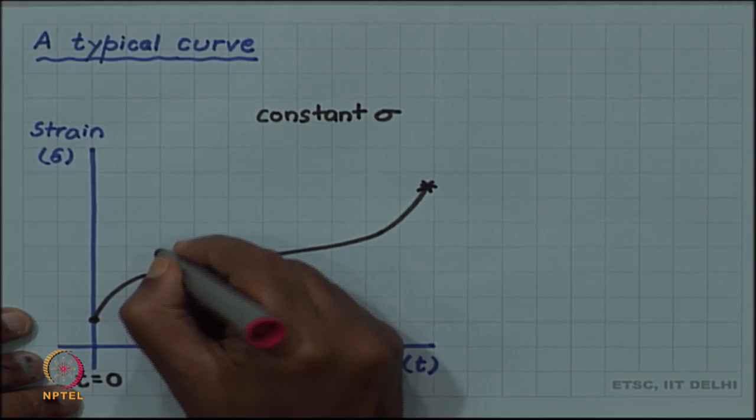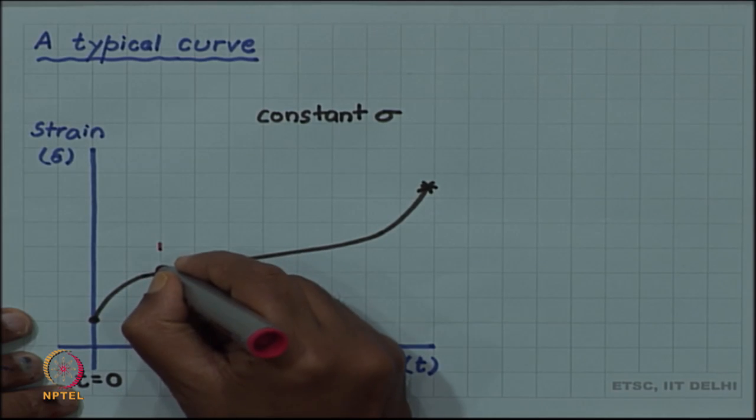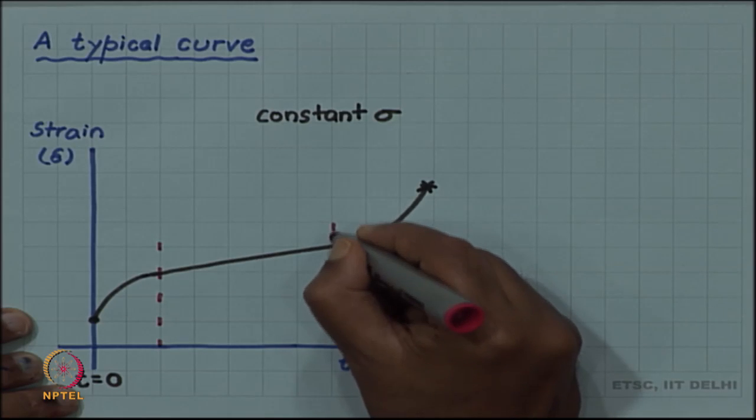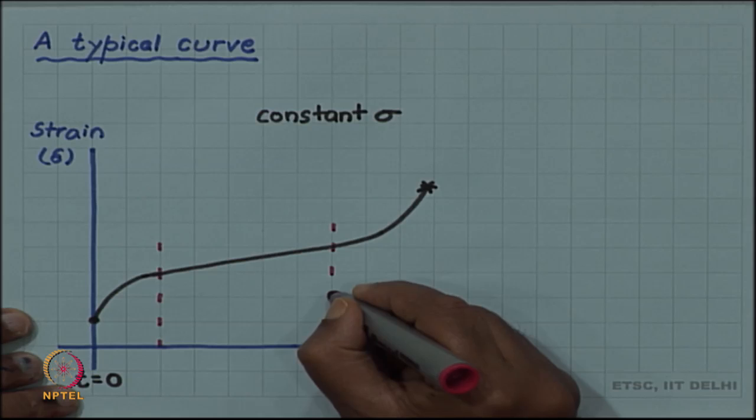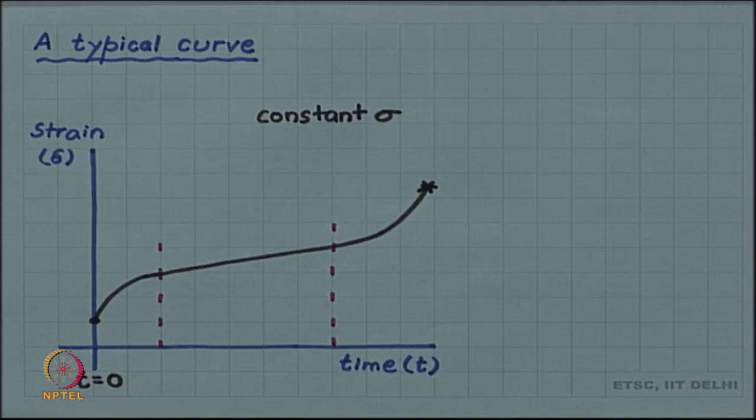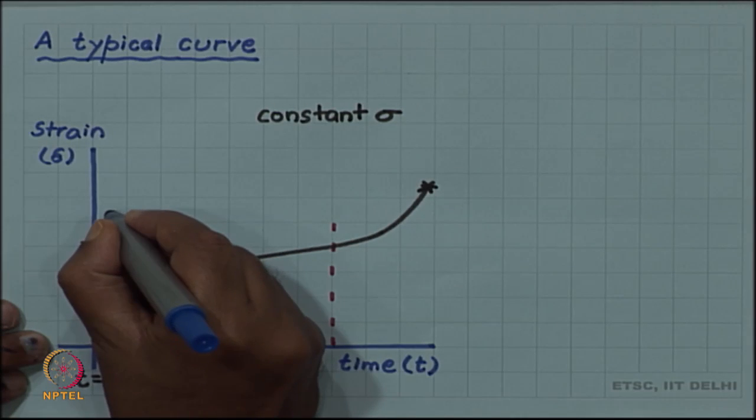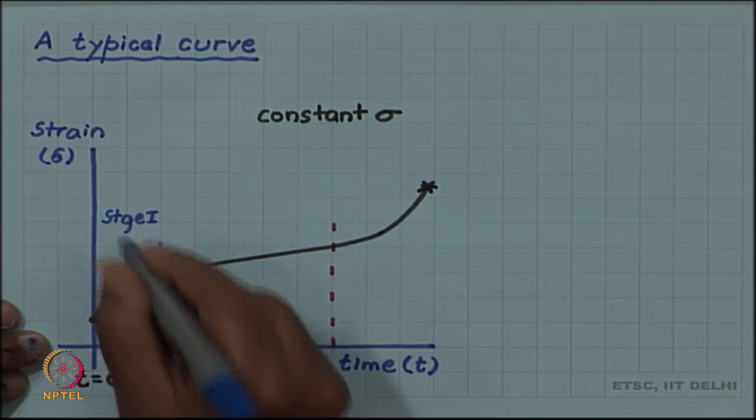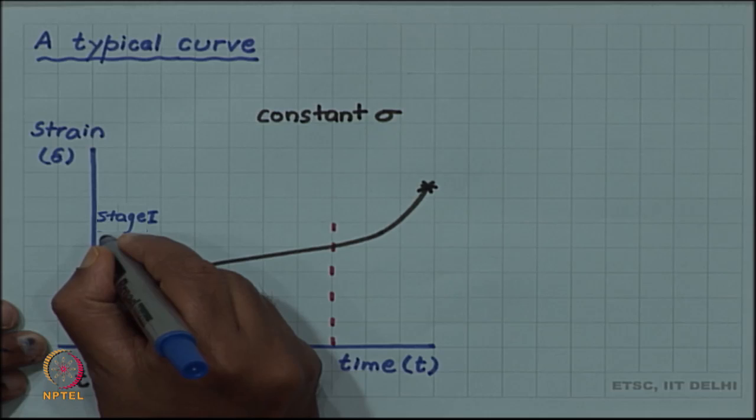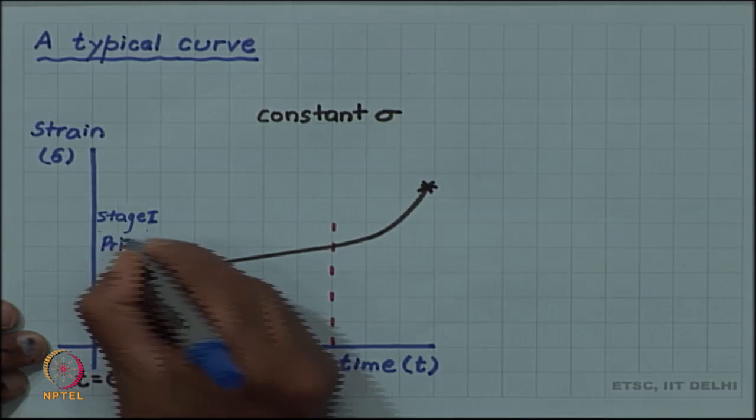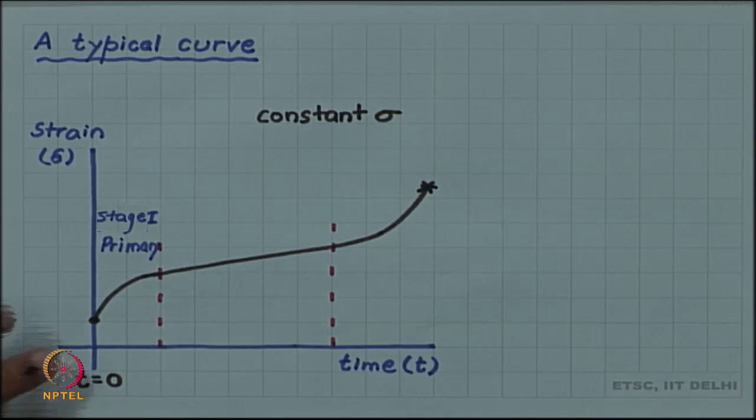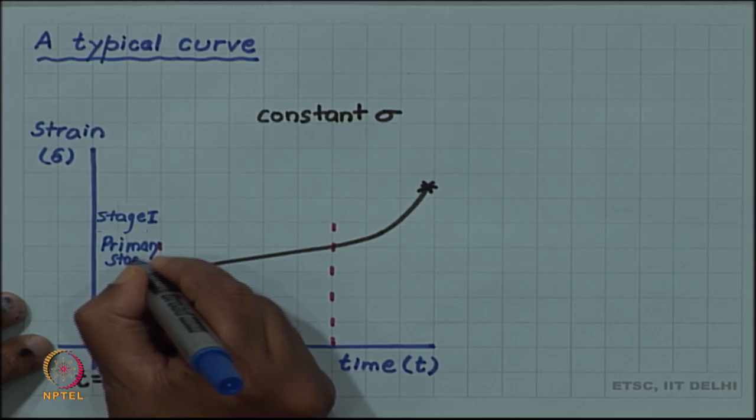Three stages are seen here. It is common to divide it in three stages: stage 1, stage 2, and stage 3. The first stage is stage 1, it is also called primary stage.